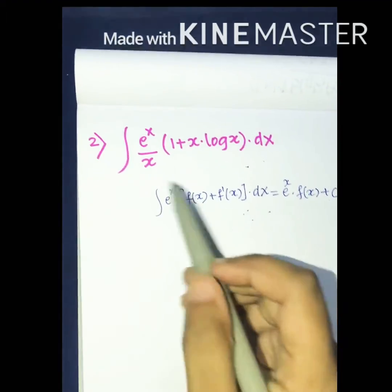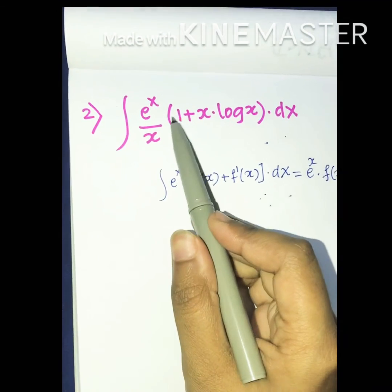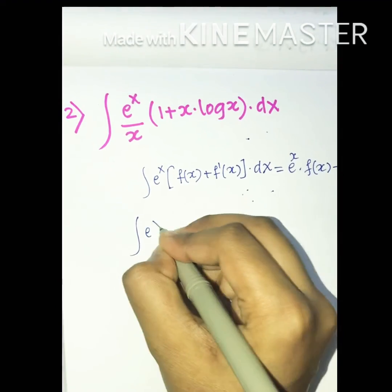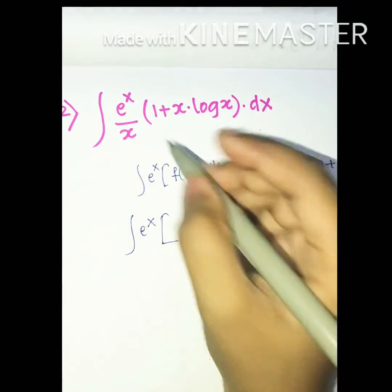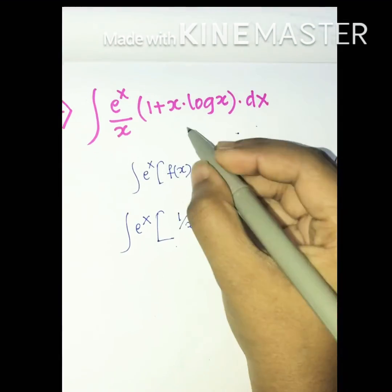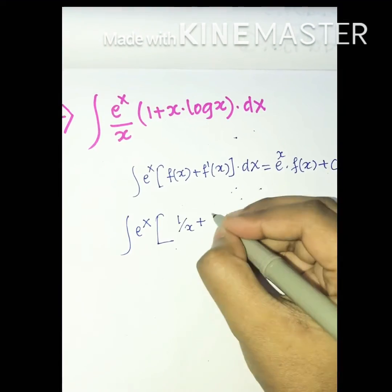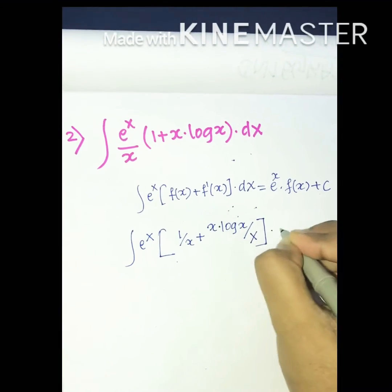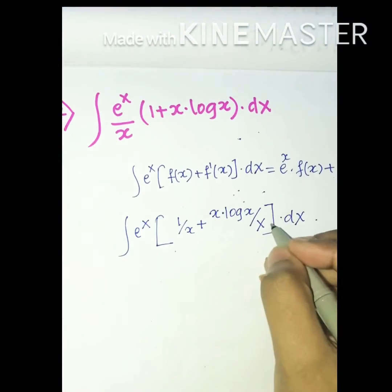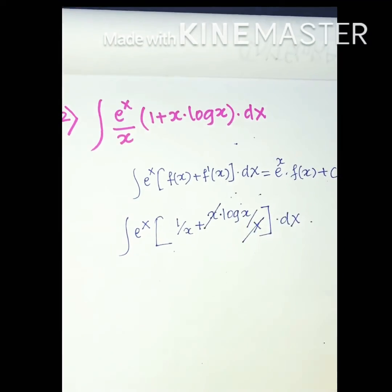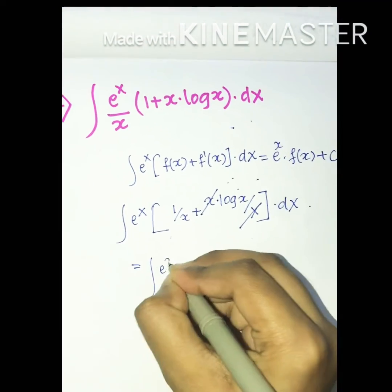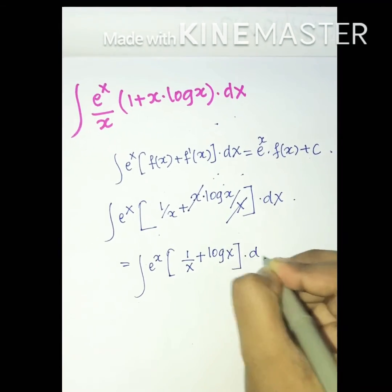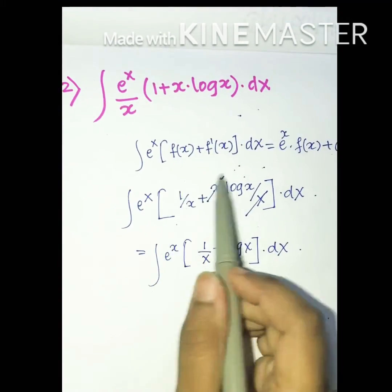Multiply the denominator x inside the bracket with both terms: eˣ·[(1/x) + (x log x / x)] dx. Cancel x in the second term, giving eˣ·[(1/x) + log x] dx.